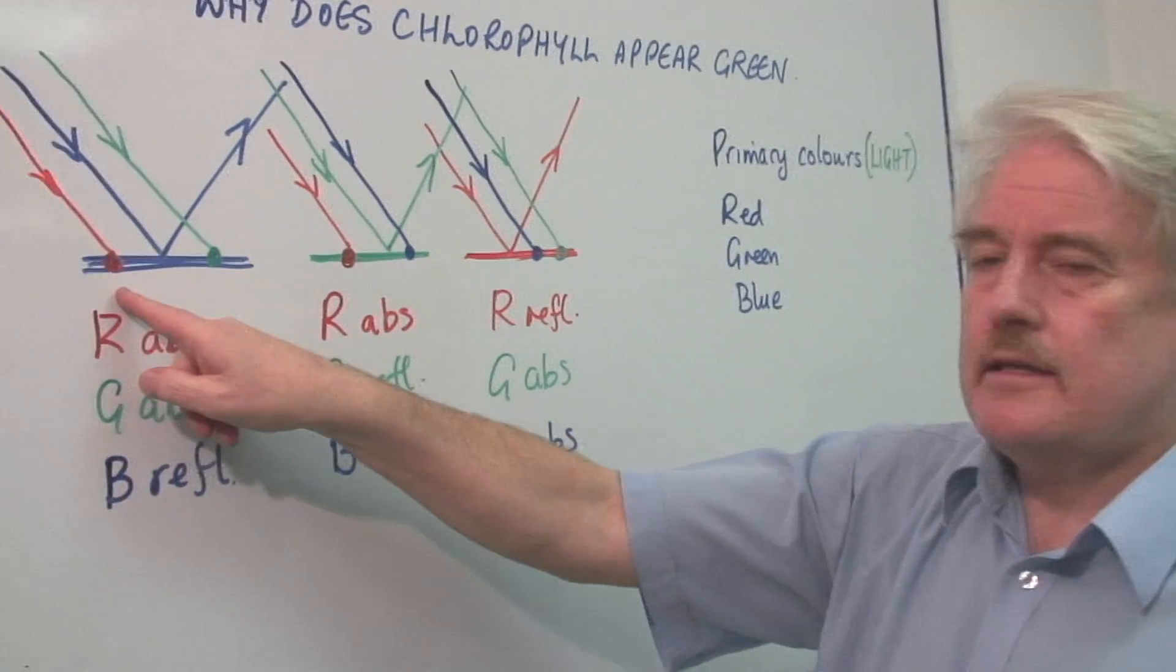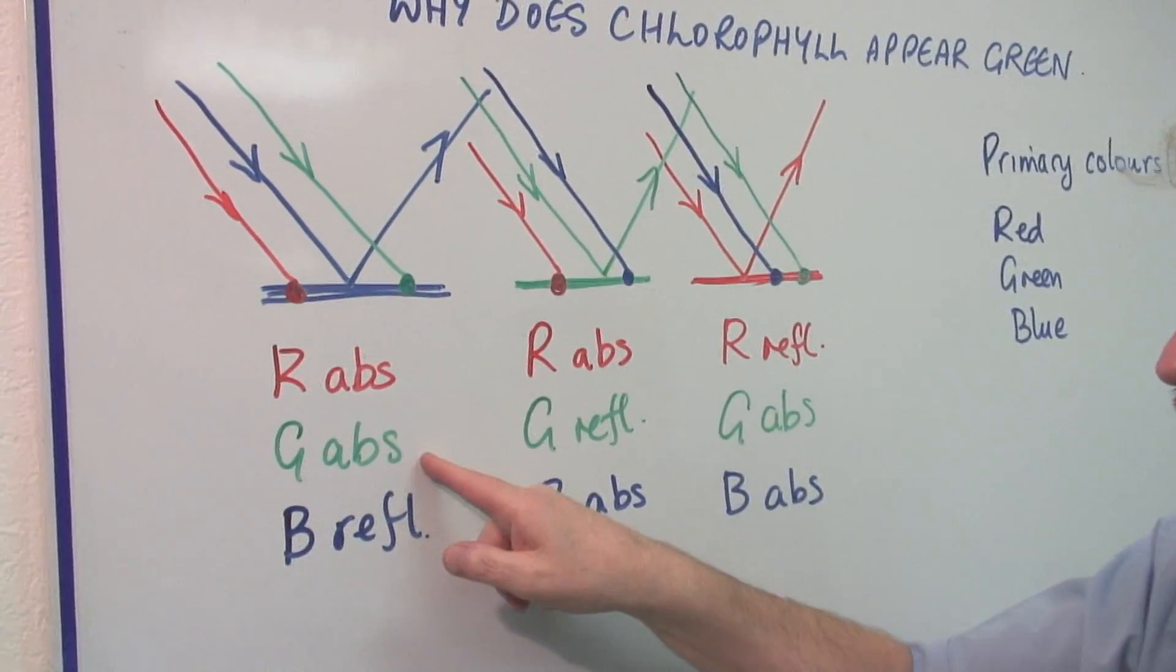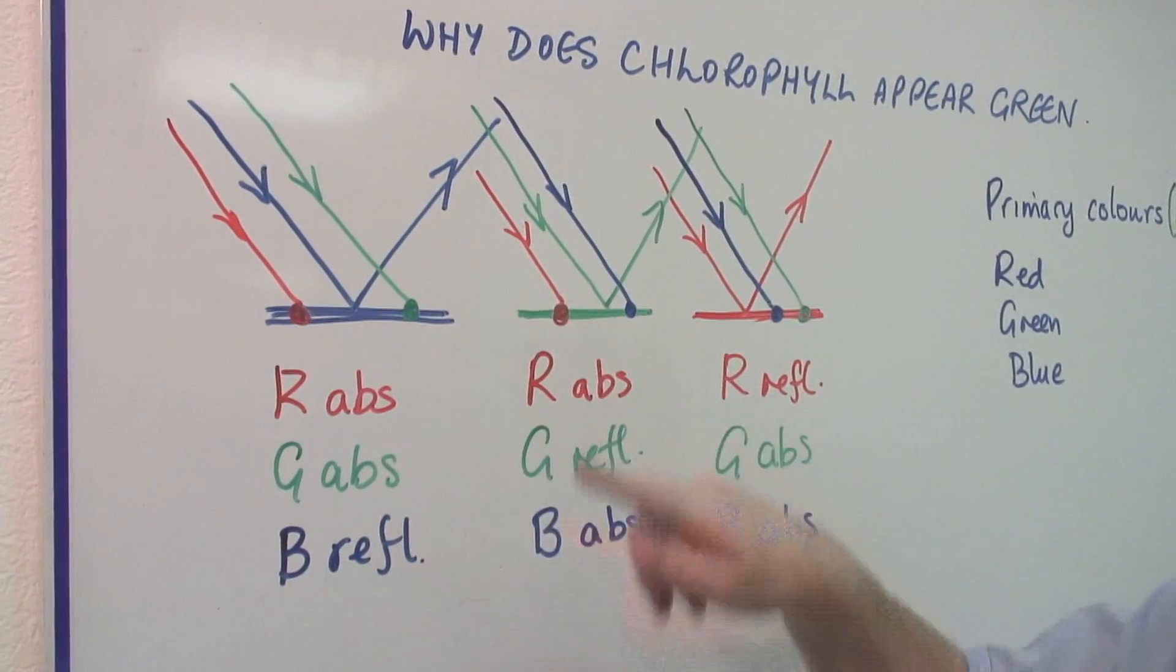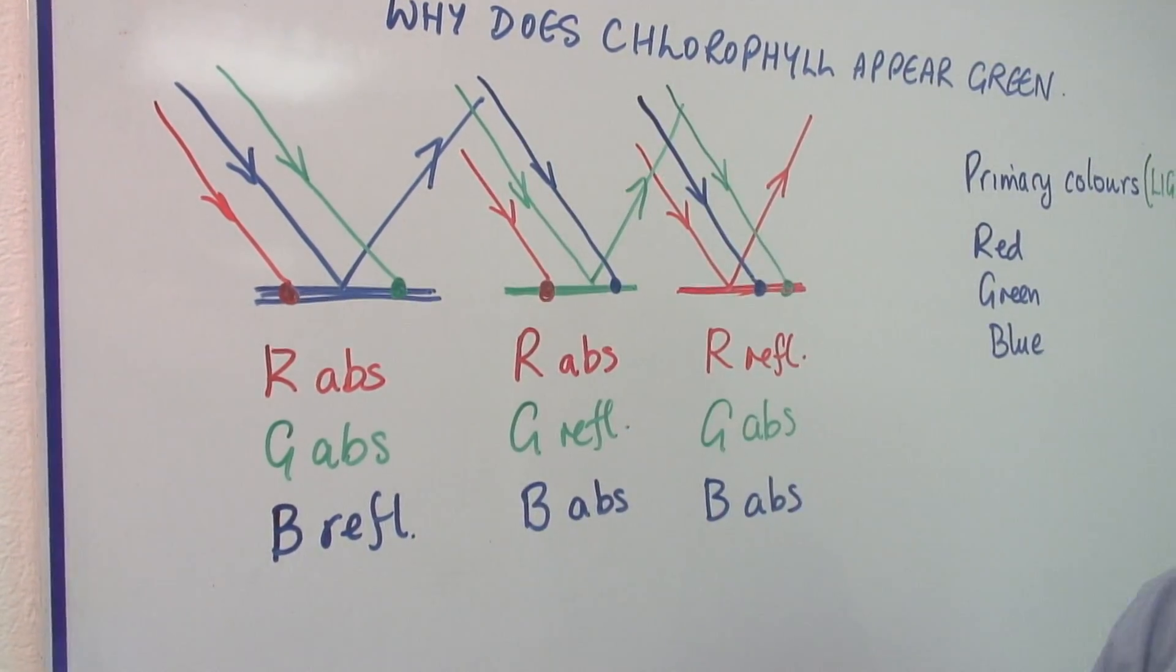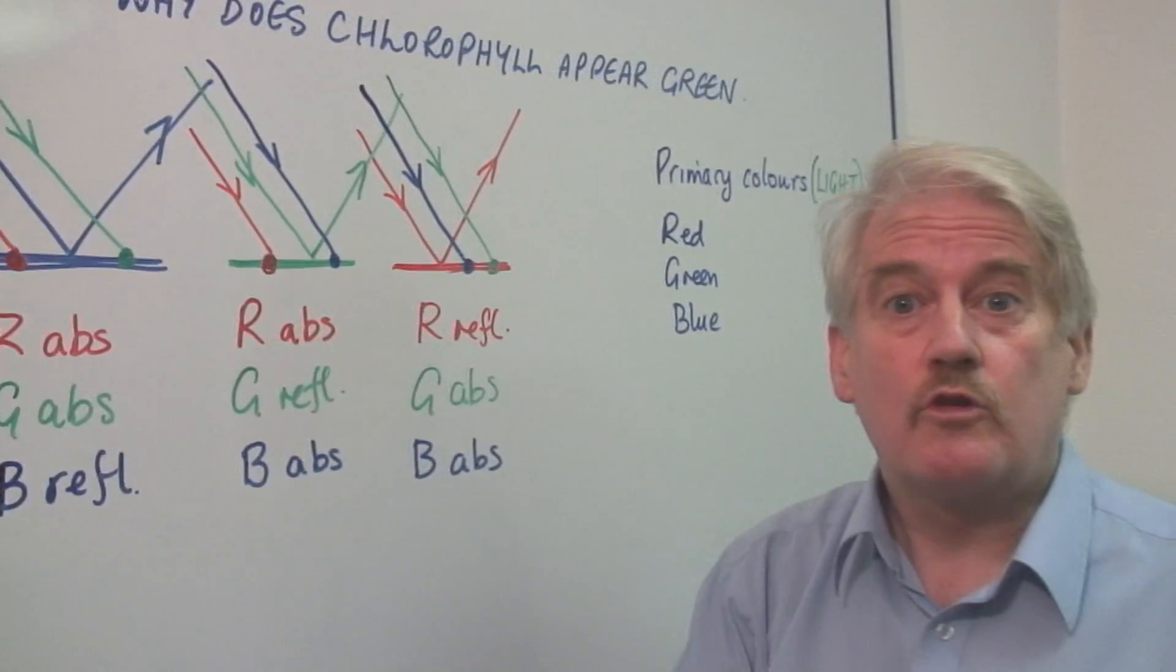So the red light is absorbed in the surface, the green light is absorbed in the surface, but the blue light is reflected. That's why it looks blue.